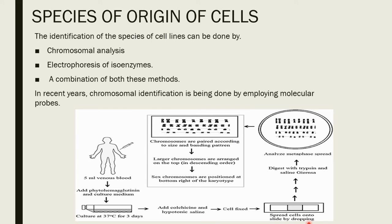Species of origin of cells can be determined by chromosome analysis or electrophoresis of isoenzymes, or a combination of both. We extract the cell, fix it on a slide, spread and fix it, then digest it with trypsin enzyme and analyze the metaphase spread. The karyotype is read: short chromosomes are sex chromosomes and long chromosomes are autosomal chromosomes. We can determine the chromosomal structures and identify the species using this information.